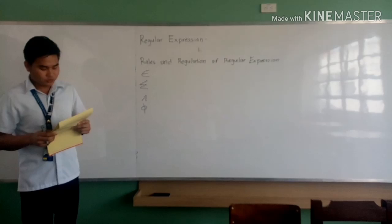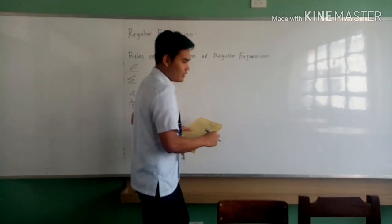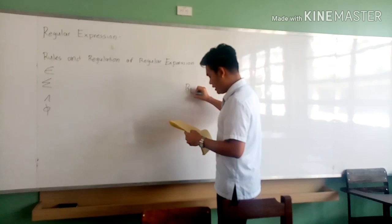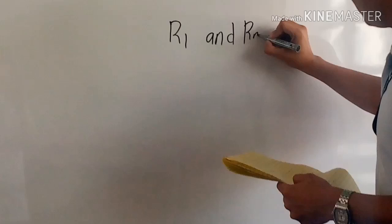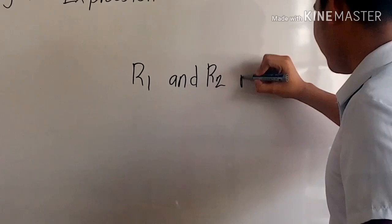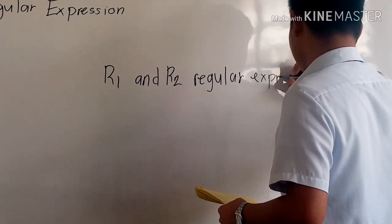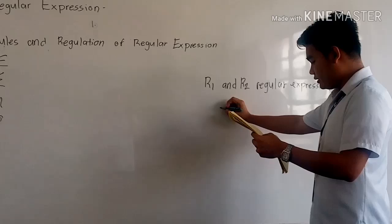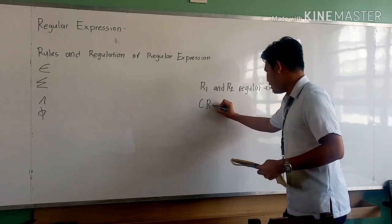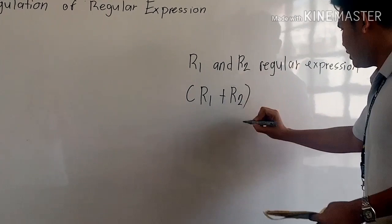Number two: the union of two regular expressions is also a regular expression. For example, if I have R1 and R2, where R1 and R2 are regular expressions, then (R1 + R2) is also a regular expression.